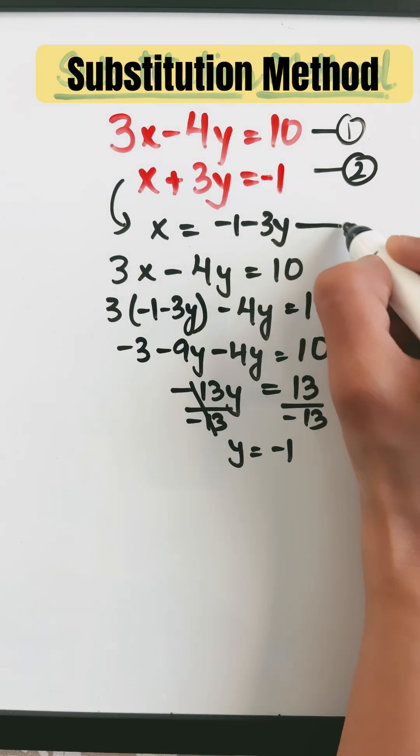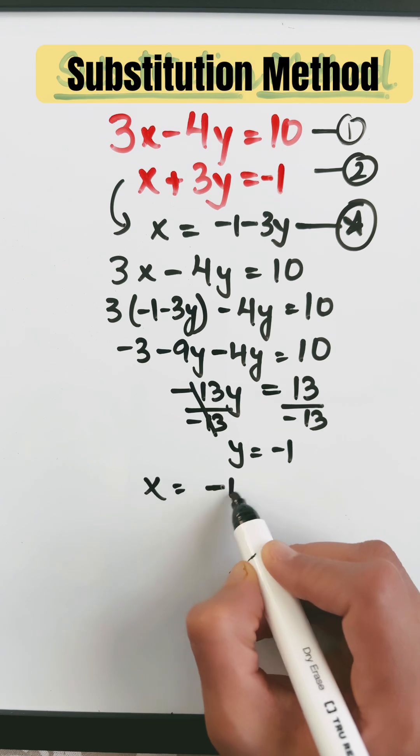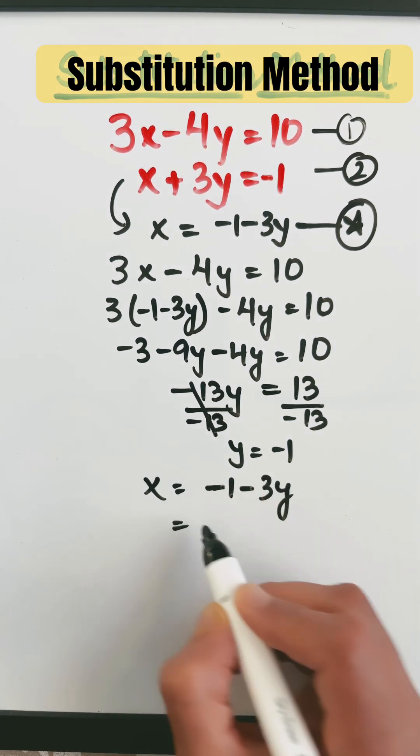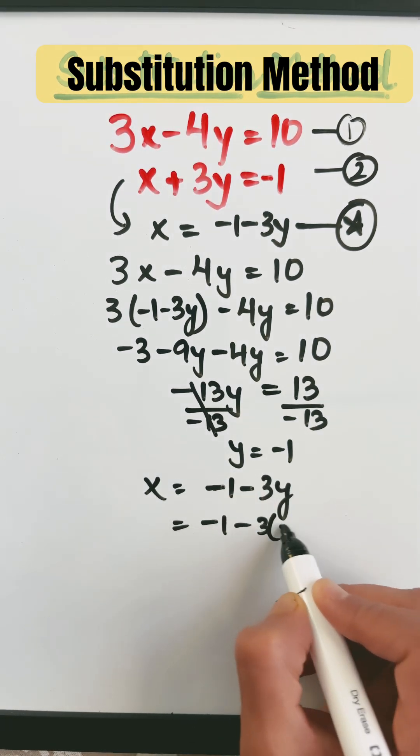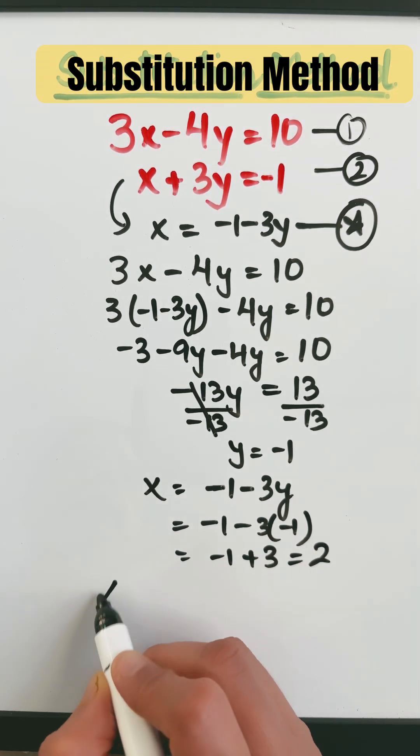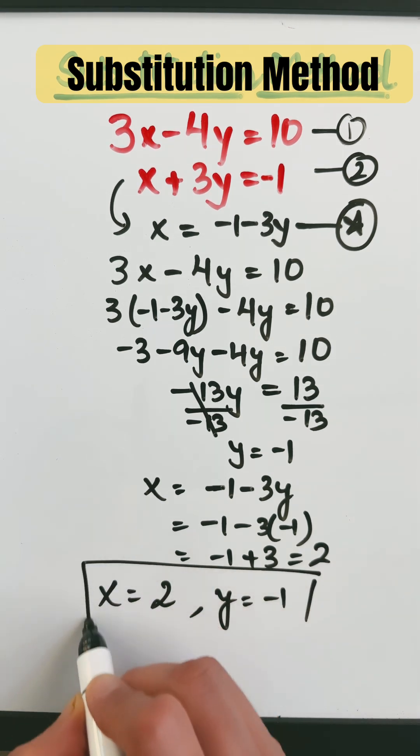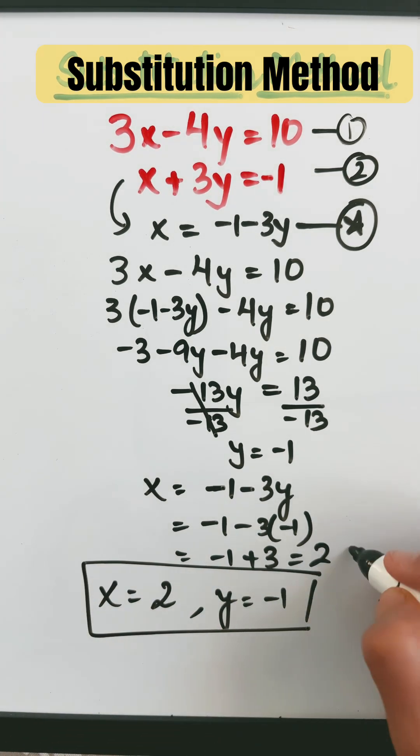Put this y as minus 1 in this equation. So x equals minus 1 minus 3y which gives me minus 1 minus 3 times minus 1. So minus 1 plus 3, and 3 minus 1 is 2. So x equals 2 and y equals minus 1 is the solution for this system of linear equations. That's all.